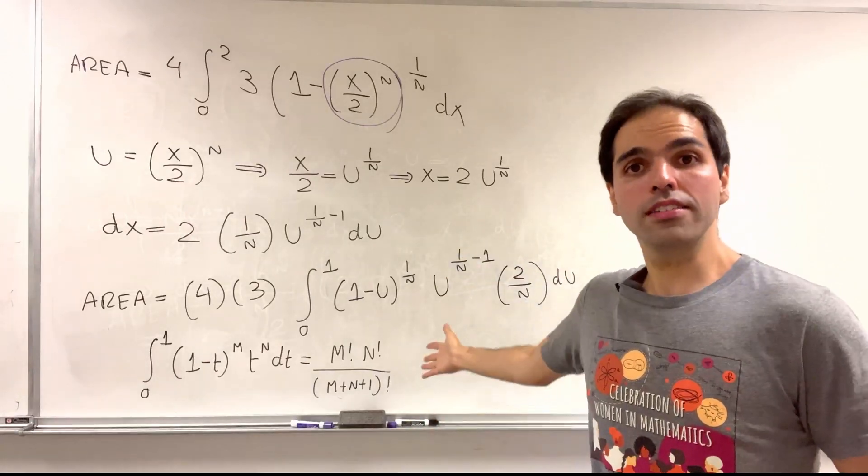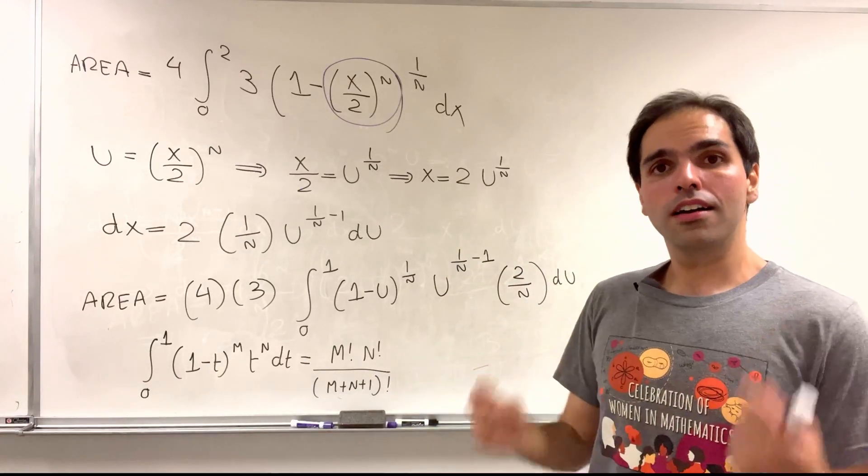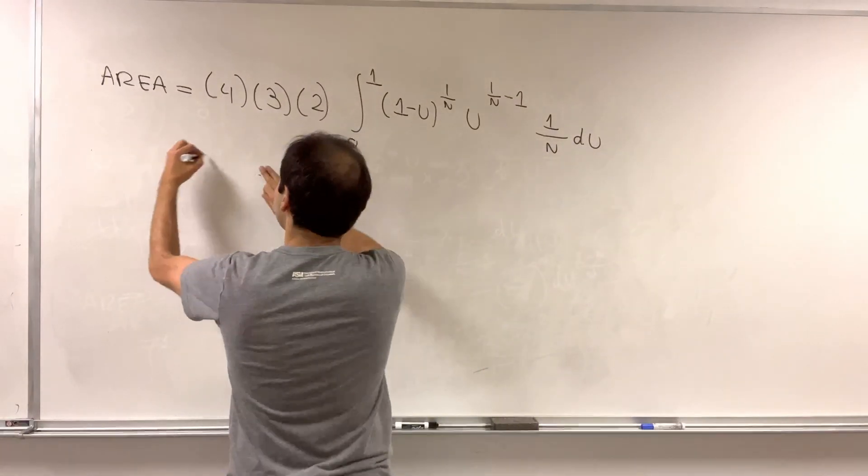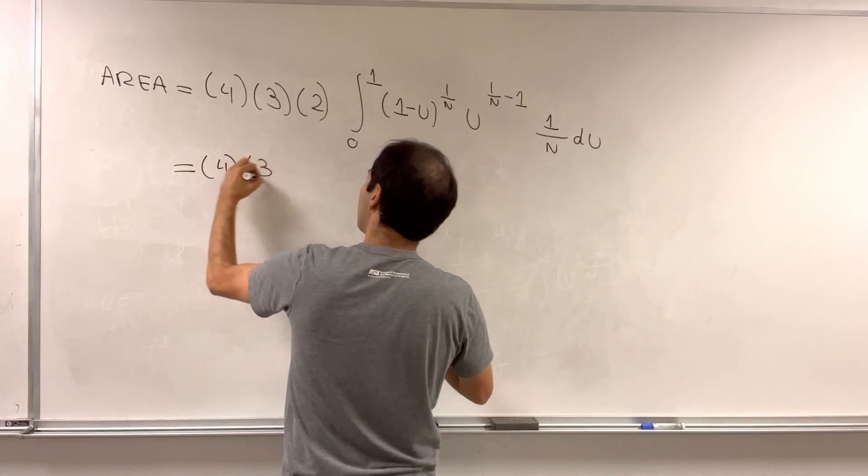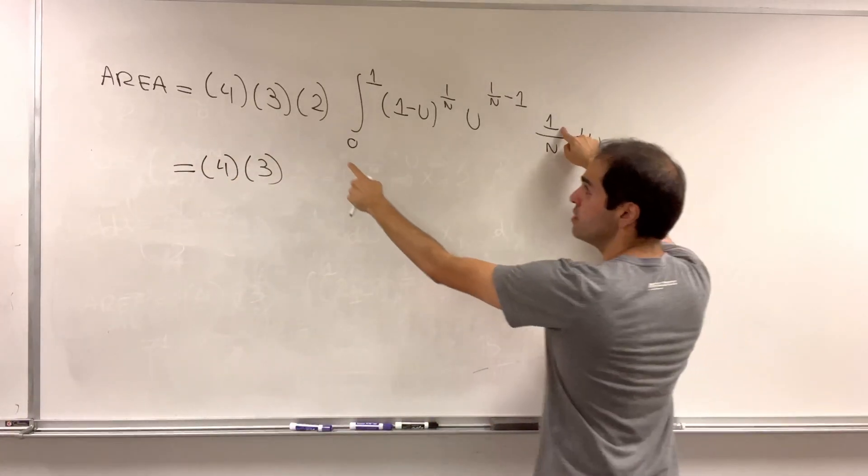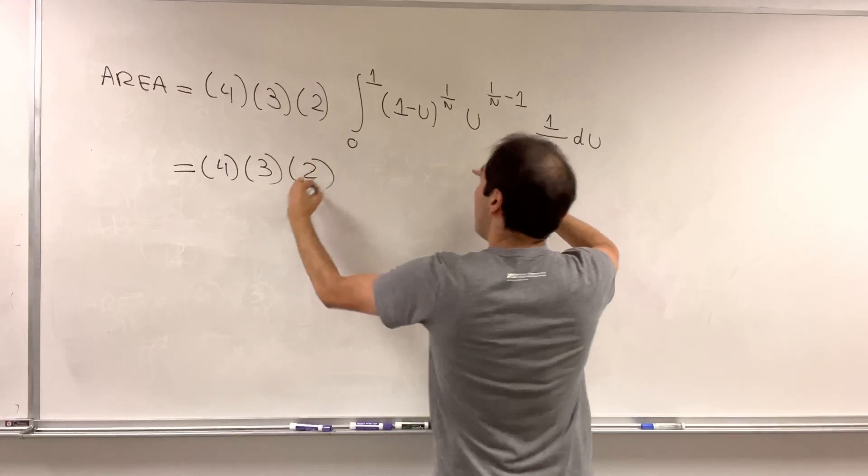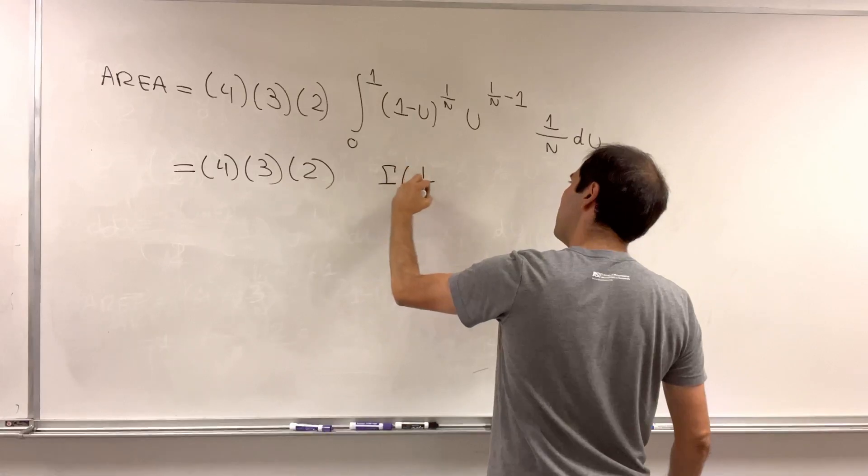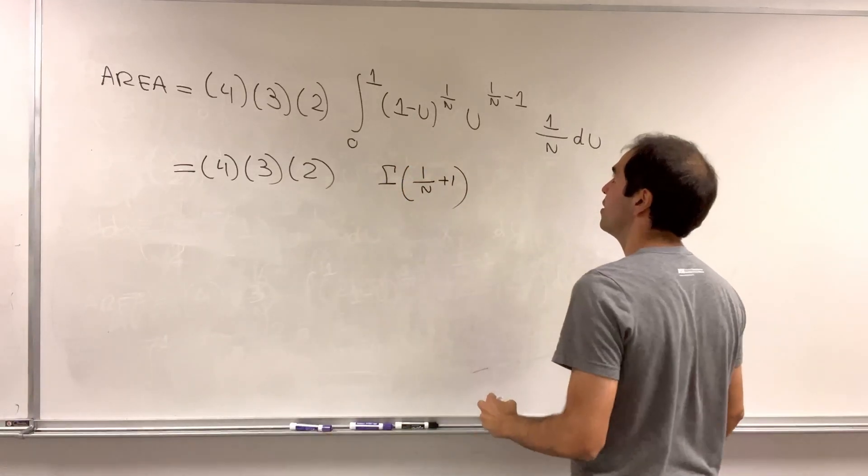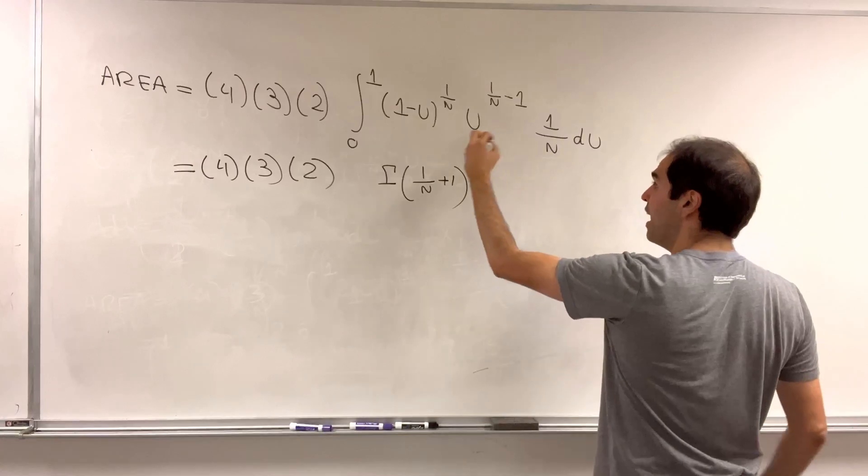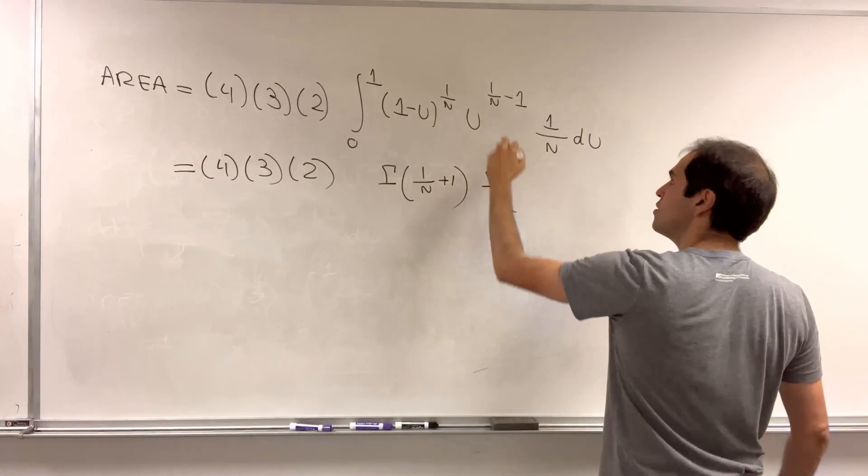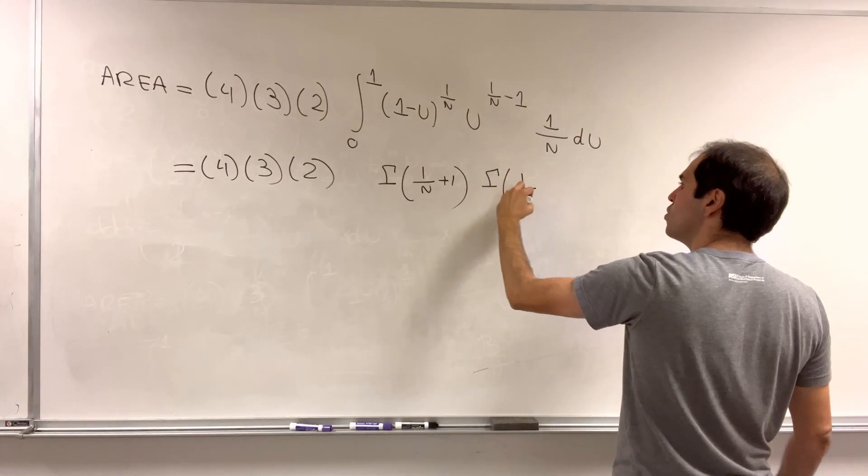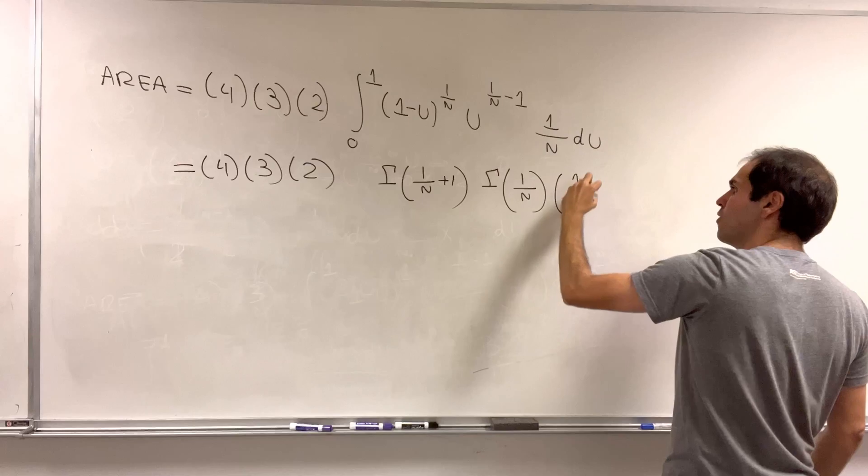If you plug this into this formula, the result is as follows. We still have this 4 from the quadrants, the 3 from the axis of the ellipse, and this 2. Now we need 1 over n factorial, which is the same thing as gamma of 1 over n plus 1. 1 over n minus 1 factorial, so gamma of 1 over n minus 1 plus 1, which is gamma of 1 over n.